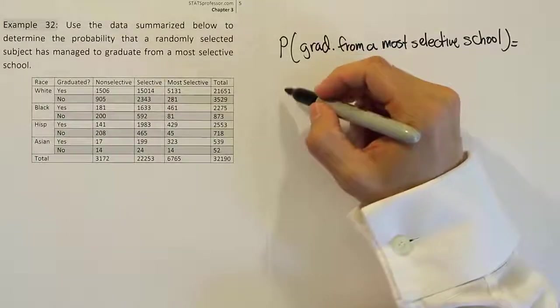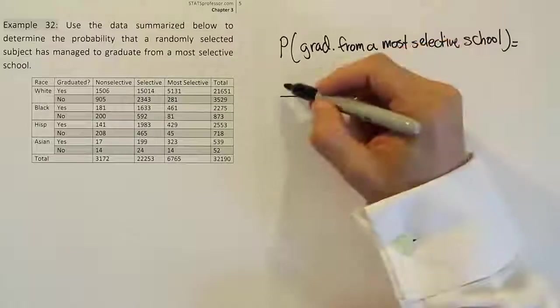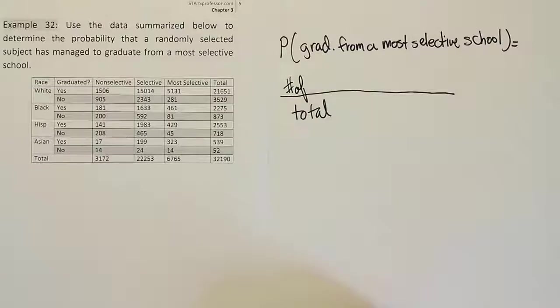The next step in the process is to create a fraction. And that fraction will be set up as number of over total. So every basic probability problem will always be number of over total.